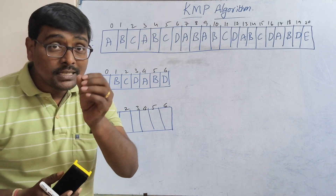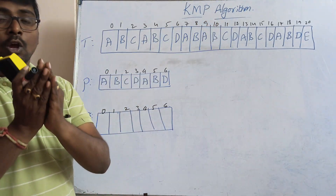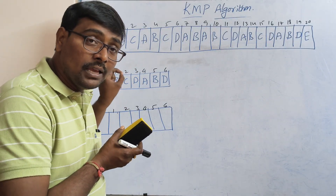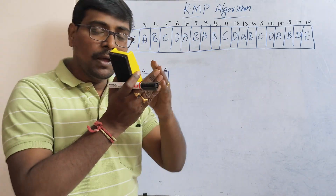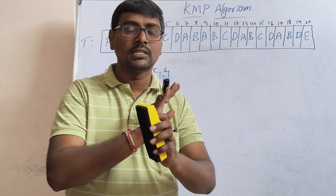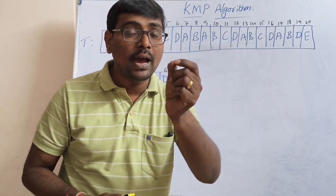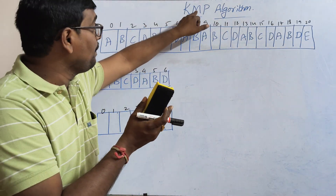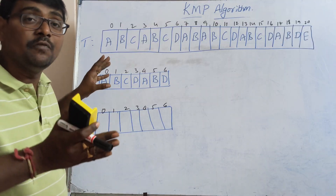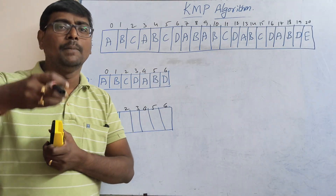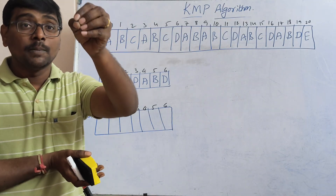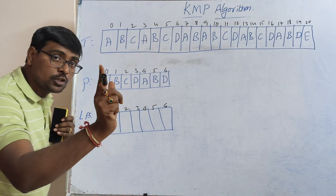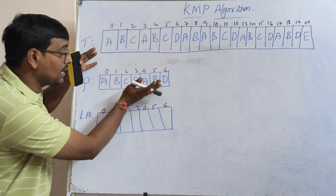Hi friends, welcome to our channel. In this session we will discuss one more example of the KMP algorithm. Given a text and pattern, we need to identify at which position the pattern is available. If the pattern is not available we display a message; if it is available we return the position. Instead of the brute force approach, the KMP algorithm uses an LPS table for searching, reducing repeated comparisons.